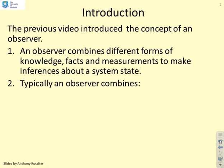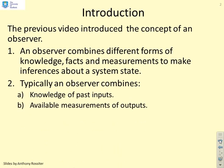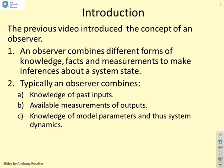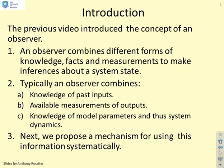Typically, in the state-space context, an observer will combine knowledge of the past inputs, available measurements of the outputs and knowledge of the model parameters or underlying system dynamics. So what we're going to do in this video is propose a mechanism for using these three pieces of information systematically to get an estimate of the system state.